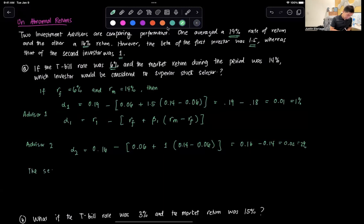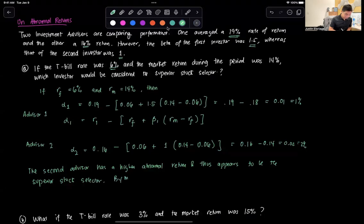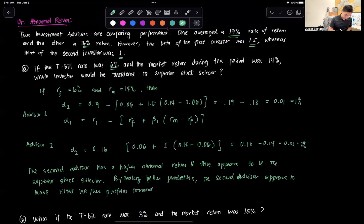We have that the second investor, the second advisor, has a higher abnormal return and thus appears to be the superior stock selector by making better predictions.